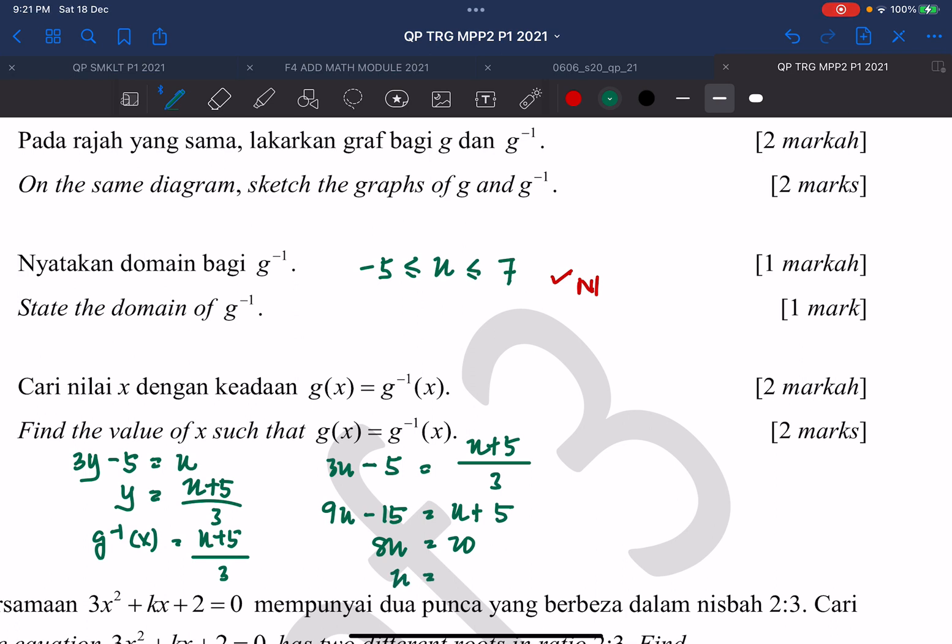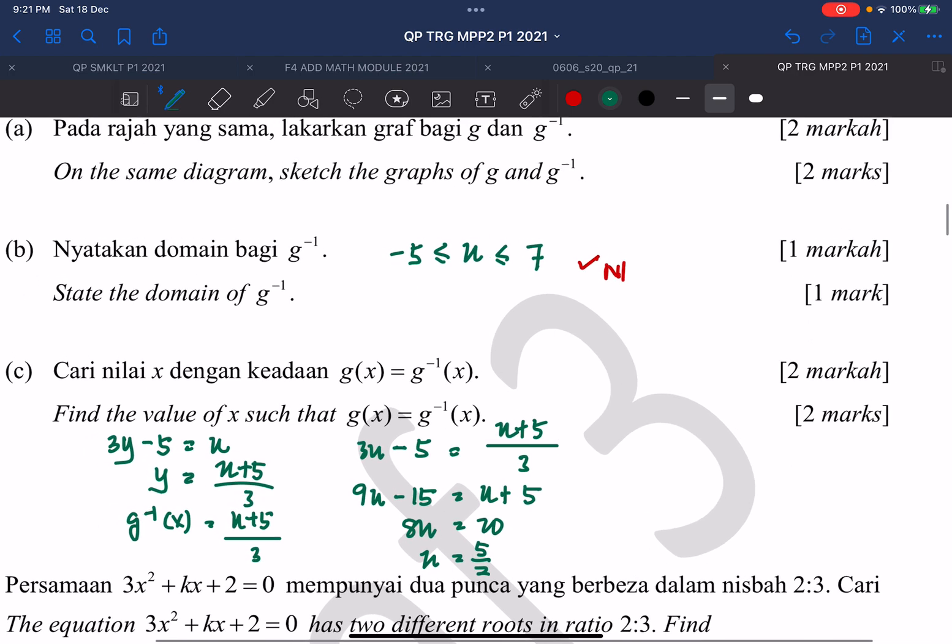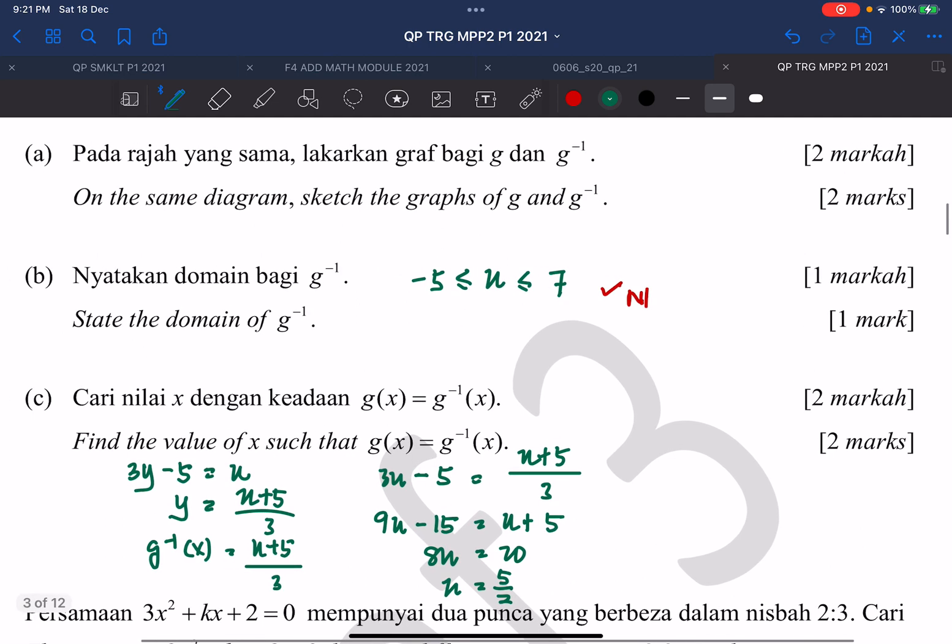You should get 5 over 2, or 2.5. So your x should be 5 over 2.